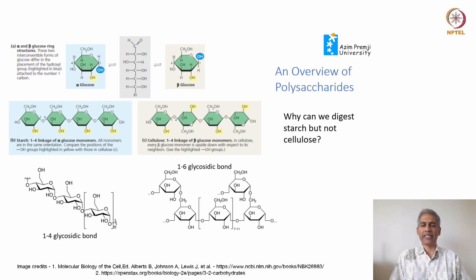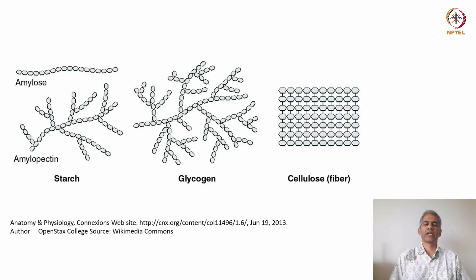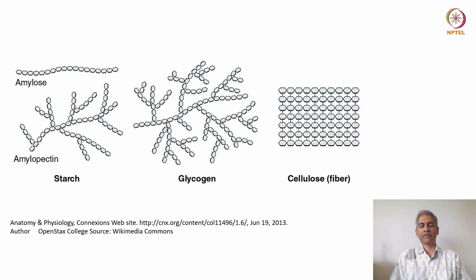The structure can impact the properties of the molecule. We can ask why we can digest starch but not cellulose, and look at it from a structural standpoint. Starch is made up of two polysaccharides: amylose, a linear polymer formed by 1,4-glycosidic alpha-glucose bonds, and amylopectin, which has both 1,4 and 1,6 bonds and is therefore a branched structure. Starch is a mixture of amylose and amylopectin.